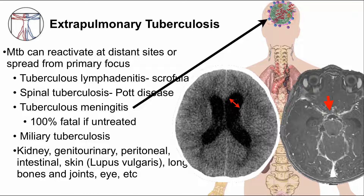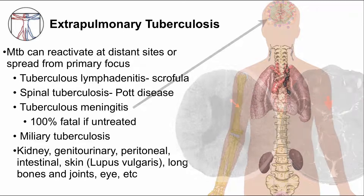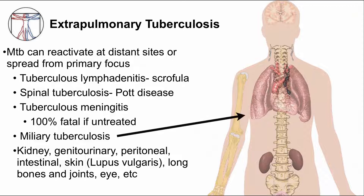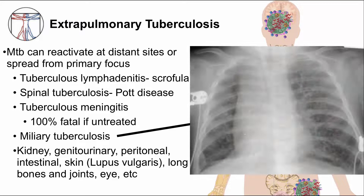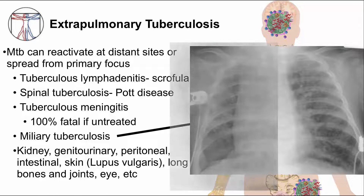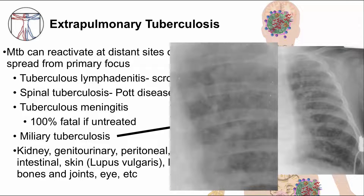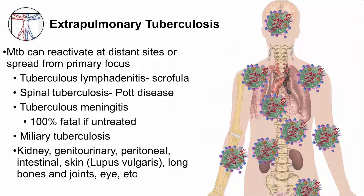In infants, TB meningitis can also be associated with miliary TB, which means that MTB has disseminated to multiple distant sites within the lung and in the body. The chest x-ray with a miliary pattern in the lungs shows numerous tiny nodules all over. The word miliary comes from millet because the numerous tiny nodules look like millet seeds. All of those tiny nodules are small developing granulomas throughout the lungs from widespread dissemination of MTB throughout the body.